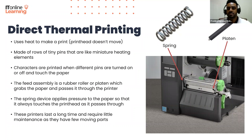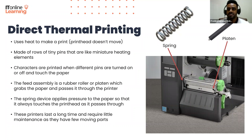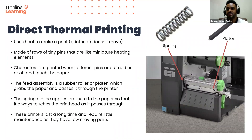The technology is simple. The feed assembly is a rubber roller or platen, like the one shown here, that grabs the paper and passes it through the printer. A spring device, also shown here, applies pressure to the paper so that it always touches the print head as it passes through.